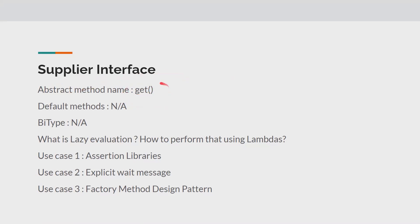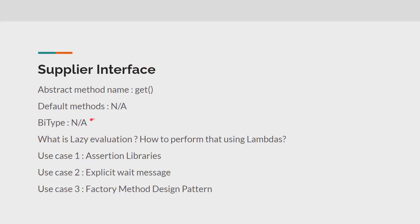Supplier is a very simple interface that has only one abstract method called 'get' that doesn't accept any parameters but it supplies — it returns — a value. It doesn't have any default methods, and there is no BiSupplier type because a method can only have one return type.